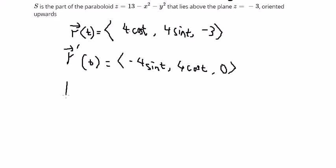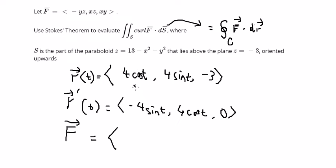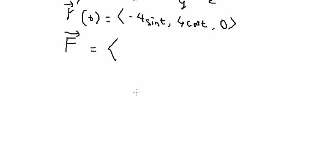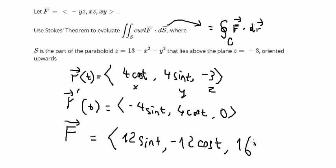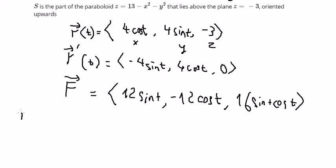Next we need to find vector F. The components give us F values: negative 12 cos(t) and 16 cos(t). Now we have the dot product to compute.